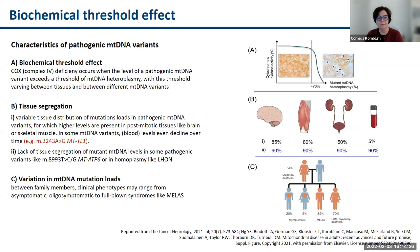Tissue segregation means there is a variable tissue distribution of mutation loads in pathogenic mitochondrial DNA variants, with higher levels usually present in post-mitotic tissues like skeletal muscle or brain. In some mitochondrial DNA variants, blood levels of mutation load may even decline over time — as shown for the MELAS mutation, the 3243A>G MTTL1 mutation. This depends on how tissues or cells deal with mitochondrial DNA molecules in mitosis. Mitophagy also plays a role.